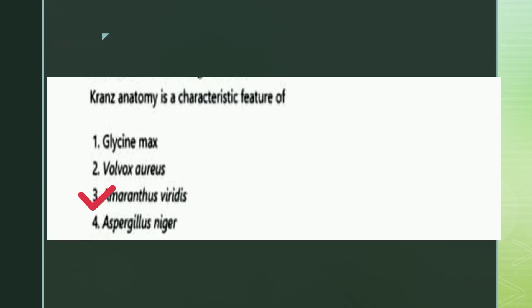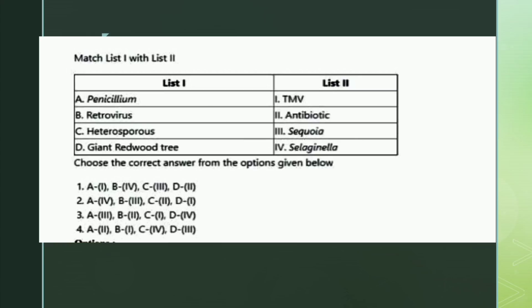The last question is also a match the following. List one: Penicillium, retrovirus, heterosporous, giant redwood tree. List two: TMV, antibiotic, Sequoia, Selaginella. The right answer is option four: Penicillium - antibiotic, retrovirus - TMV, heterosporous - Selaginella, giant redwood tree - Sequoia.